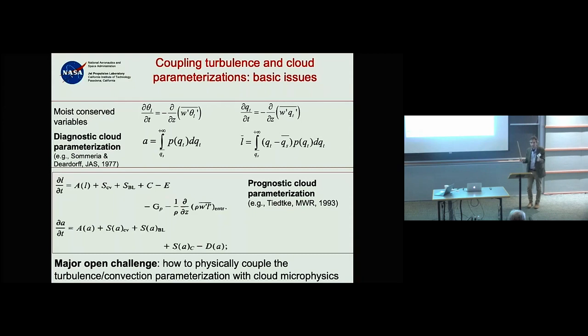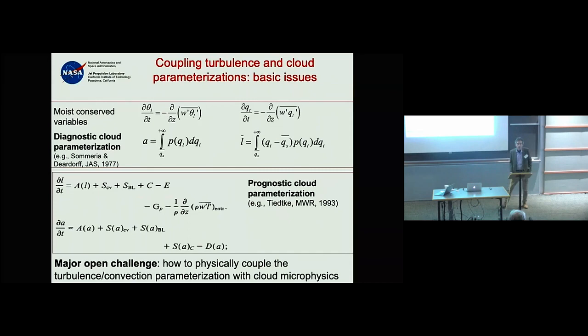If you use moist conserved variables with PDFs containing variability associated with turbulence and convection, then by definition your cloud cover and liquid water can be calculated from those PDFs — giving a closed system of equations.